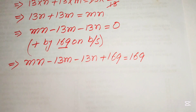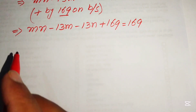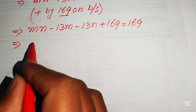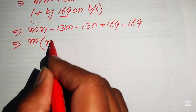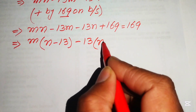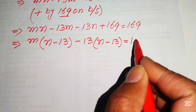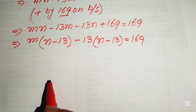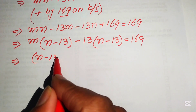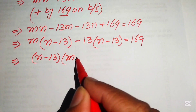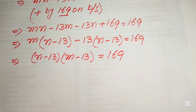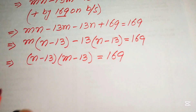Now we factor the left-hand side. Taking m common from the first two terms gives m(n minus 13), and taking minus 13 common from the remaining terms gives minus 13(n minus 13). So (n minus 13) is the common factor, yielding (m minus 13)(n minus 13) equals 169.